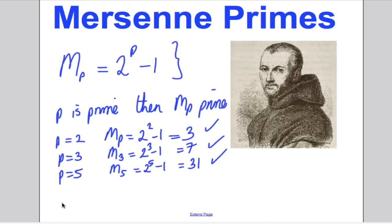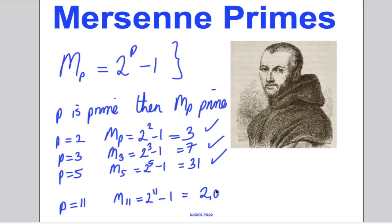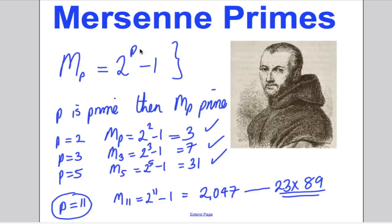However, then it came to the fore that if you put p equals 11, and you went to M_11, which is 2 to the 11 minus 1 — which in those days was a very hard and high number to compute and check if it was prime — you got 2,047. And of course that's not prime, because that could be written as 23 times 89. So although p = 2, 3, 5, 7 worked, p = 11 did not work, and so these numbers were not always prime.